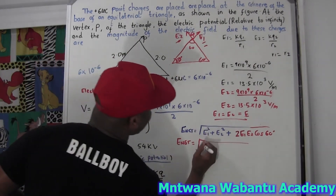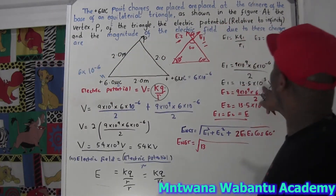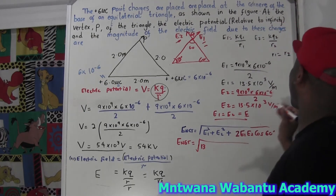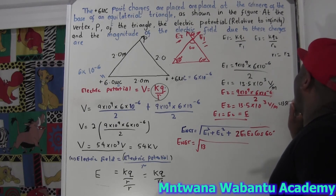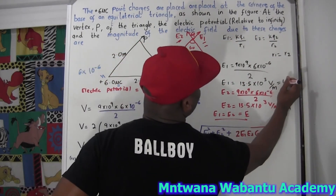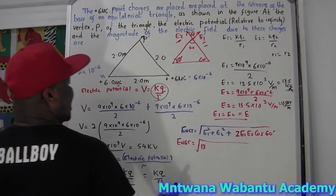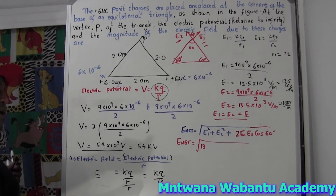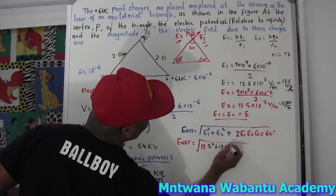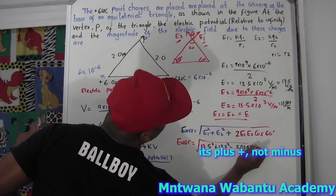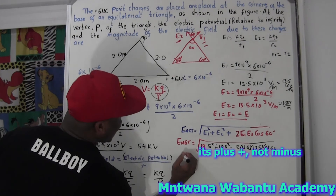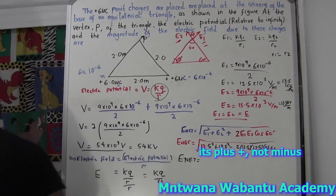Plugging in: E₁ = E₂ = 13.5 kV/m (converting from volt per meter by dividing by 1000). So E_net = √(13.5² + 13.5² + 2×13.5×13.5×cos60°). cos60° = 0.5. Plugging into the calculator gives E_net = 13.5√3 kilovolts per meter. I'm giving the answer in kV/m, but you can leave it in V/m if you prefer.